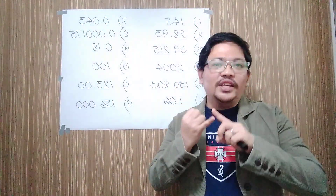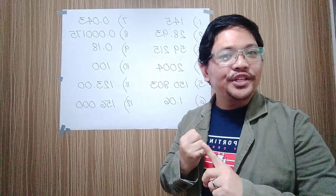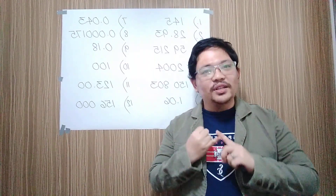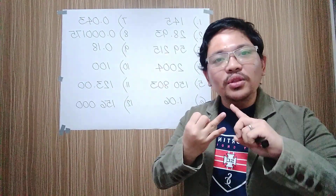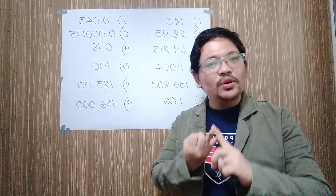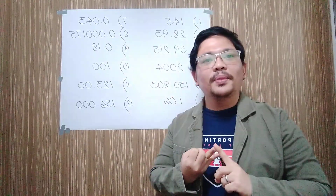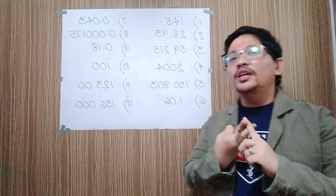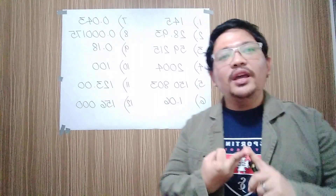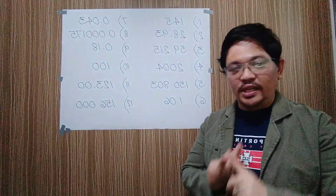The first rule says that all non-zero numbers are always significant. The second rule says that zeros in between non-zero numbers are always significant. Rule number three has something to do with the beginning zeros, and rule number four will explain the trailing zeros.